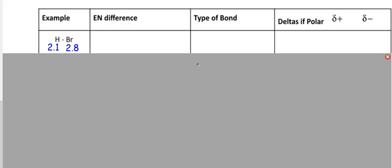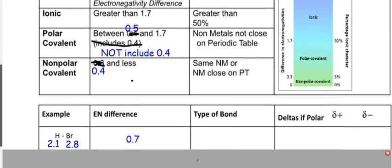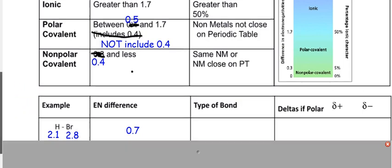Now what? Take the electronegativity difference. Subtract. You always want a positive number. Don't take 2.1 minus 2.8, you get negative 0.7. Make it so you always get a positive number. What do you get? I got 0.7. I hope you did, too. Now look up here, look at the top, and what does that give you? 0.7. There should be no doubt it's going to be polar covalent. It's going to be polar covalent.